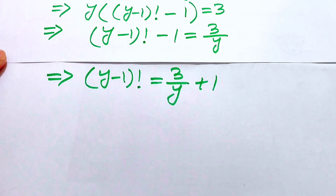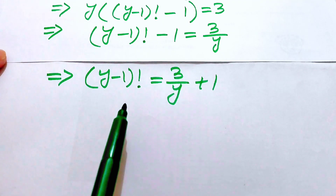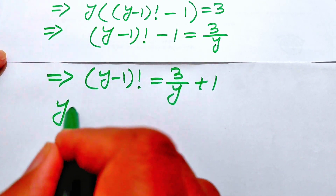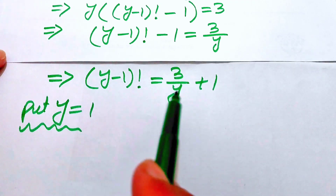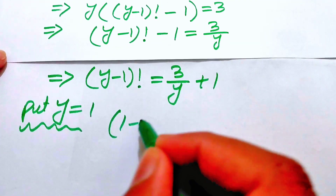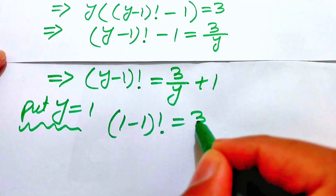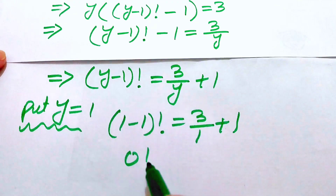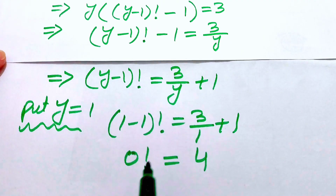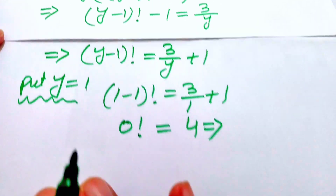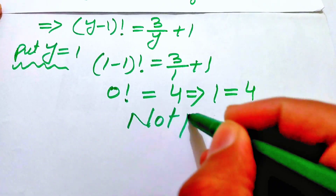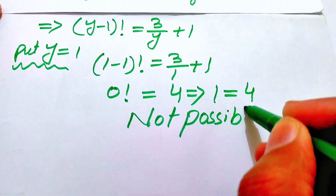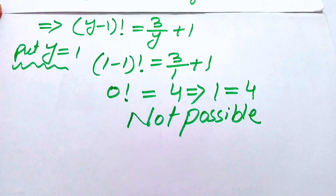We choose values of y by inspection to find which satisfy the equation. First, substitute y equals 1: (1 minus 1) factorial equals 3 over 1 plus 1, which gives 0 factorial equals 4. Since 0 factorial equals 1, we get 1 equals 4, which is not possible. So y equals 1 is rejected.